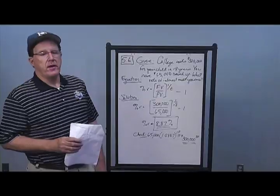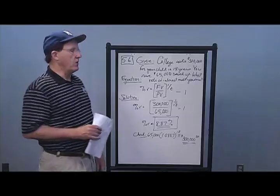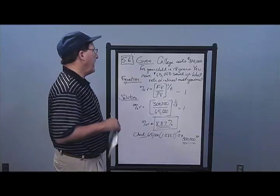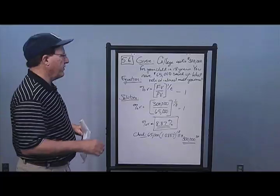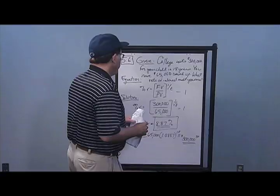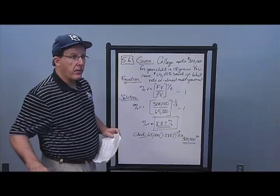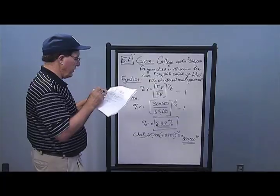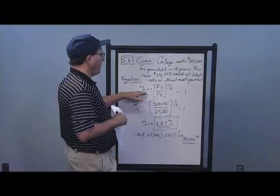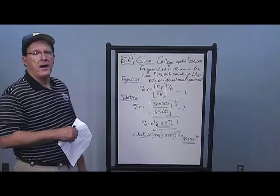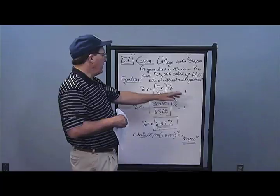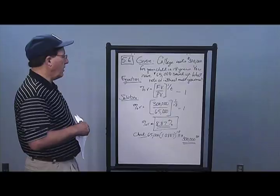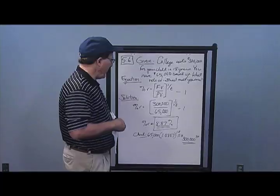Problem number six is a practical problem about sending your child to college. You estimate college will cost $300,000 in 18 years and you have $65,000 saved today. Solving the future value equation for rate: ($300,000 / $65,000) to the (1/18) power minus 1 gives a required rate of return of 8.87%.